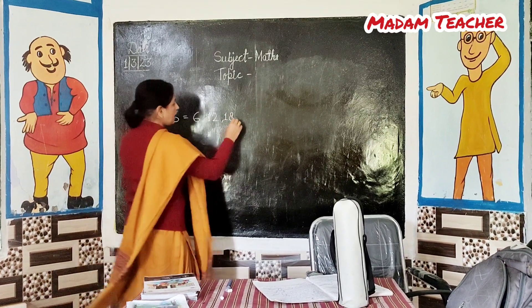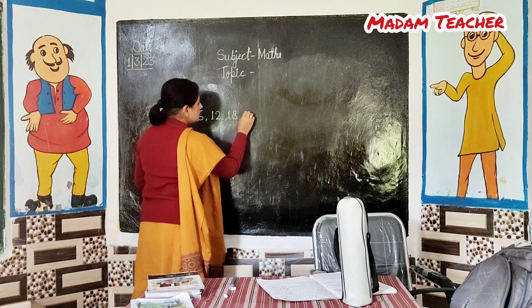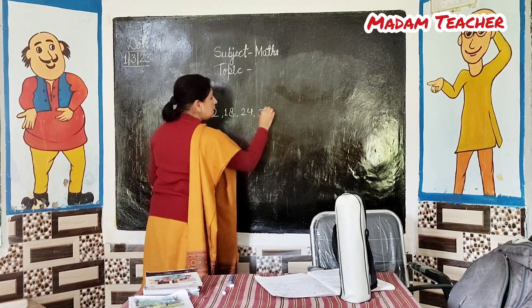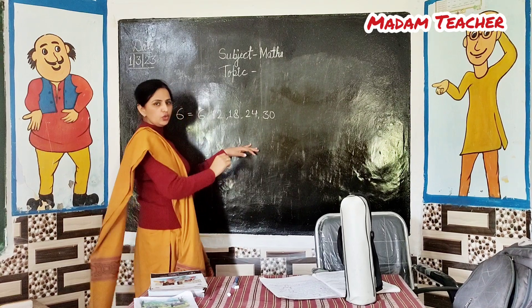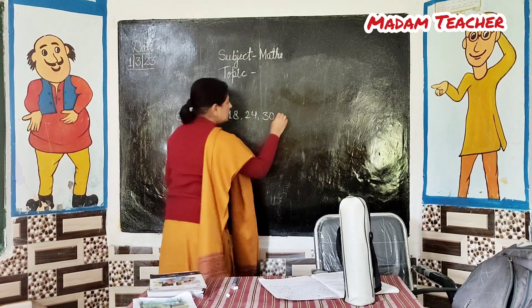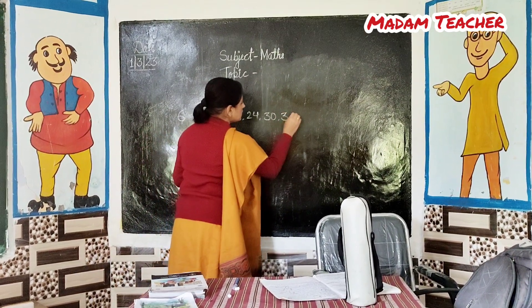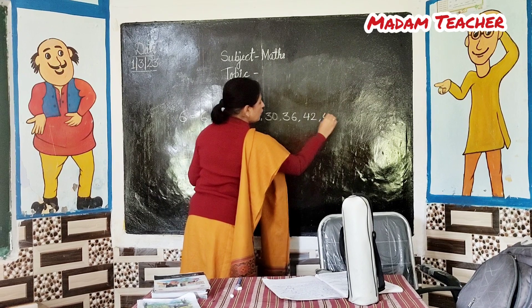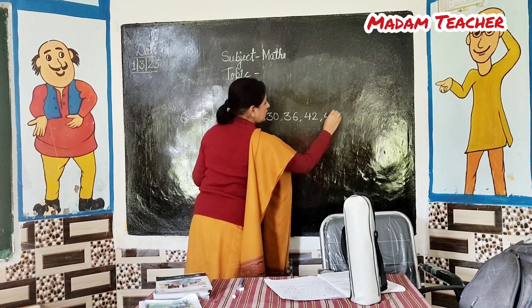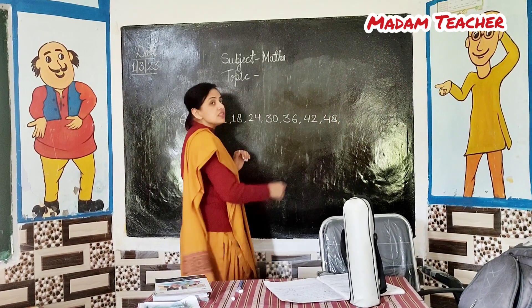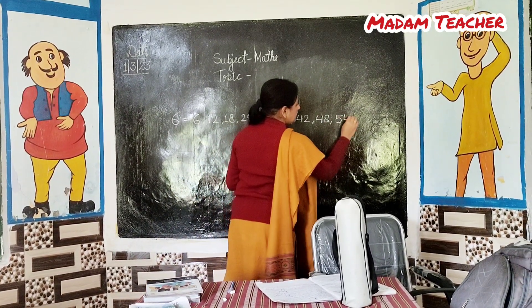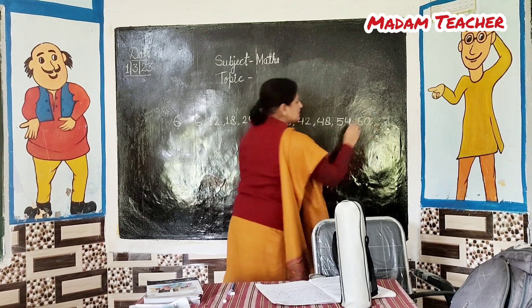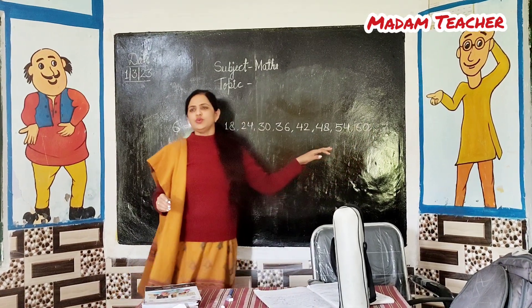Very good. 6 fours are 24. 6 fives are 30. Very good. 6 sixes are 36. 6 sevens are 42. 6 eights are 48. 6 nines are 54. And 6 tens are 60.